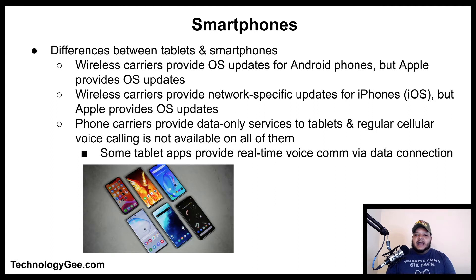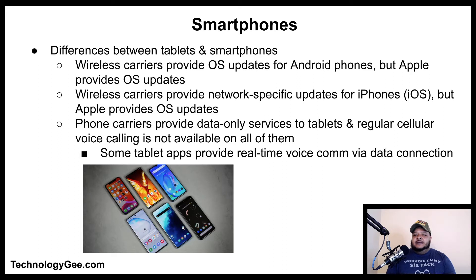Some differences between tablets and smartphones: wireless carriers provide operating system updates for Android phones, but Apple provides the OS updates. Wireless carriers provide network-specific updates for iPhone such as iOS, but Apple provides the operating system update. Phone carriers provide data-only services to tablets, and regular cellular voice calling is not available on all of them — some tablet apps provide real-time voice communication via the data connection.